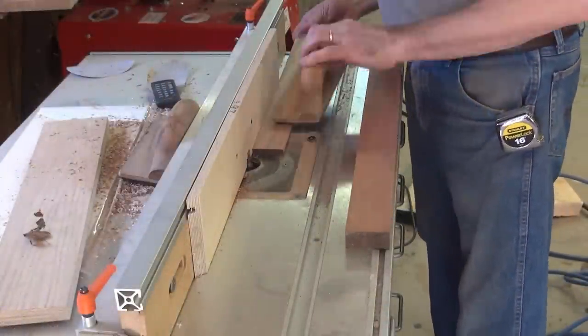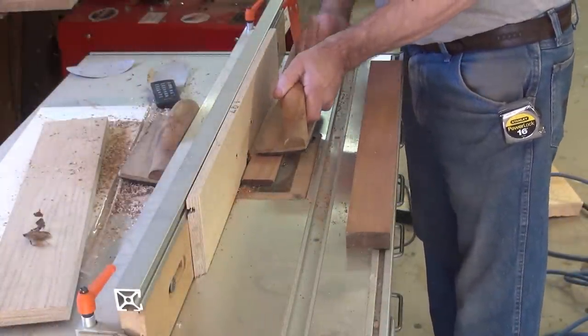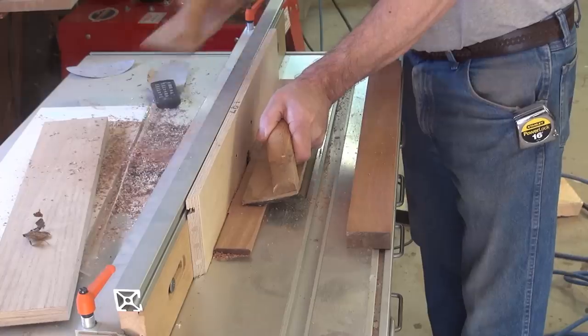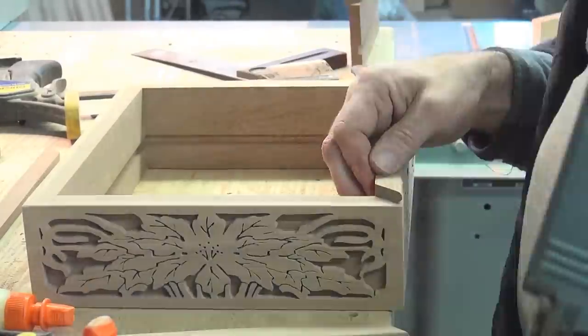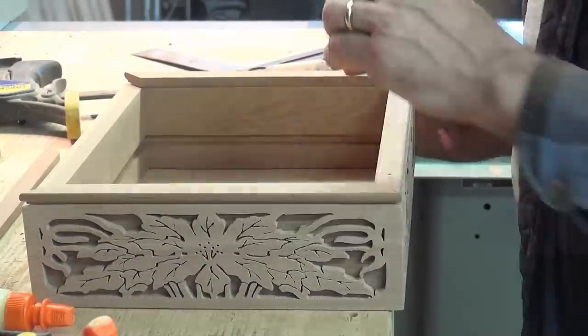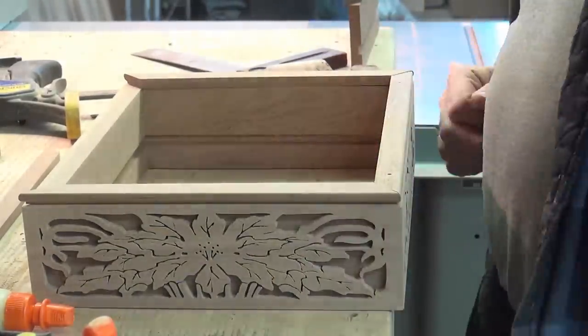Now the top and the bottom of the box will have a bead detail that I will make on the router table. I make sure not to use any brads where the hinges will be mortised in.